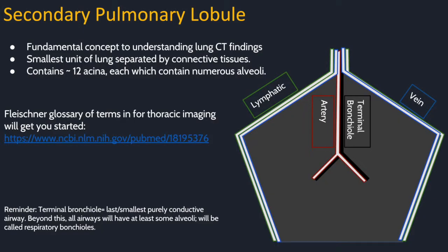Finally, I wanted to introduce the concept of the secondary pulmonary lobule. This concept is fundamental to understanding and interpreting lung CTs. The lobule is the smallest unit of lung separated by connective tissue. The center contains the artery and the terminal bronchiole, and the periphery contains lymphatics and the veins. Note that they all come together at the proximal end of the lobule. The lobule itself contains 12 or so acini, each of which contain many alveoli. Diving into this concept is beyond the scope of this lecture, but I want you to be familiar with it as you start looking at chest CTs.